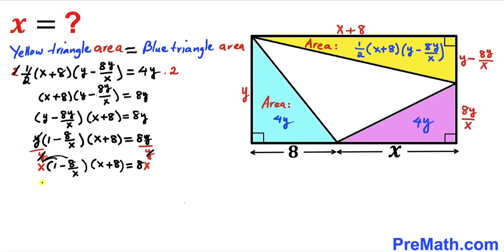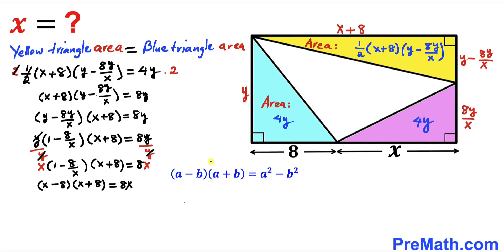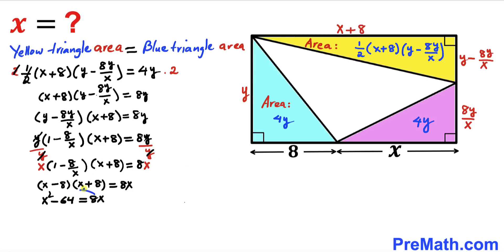Now we are going to multiply by x on both sides and distribute, so we get (x − 8)(x + 8) = 8x. Recalling the famous identity (a − b)(a + b) = a² − b², we apply it on the left-hand side: x² − 64 = 8x. Moving 8x to the left-hand side, we end up with x² − 8x − 64 = 0. This is our quadratic equation.